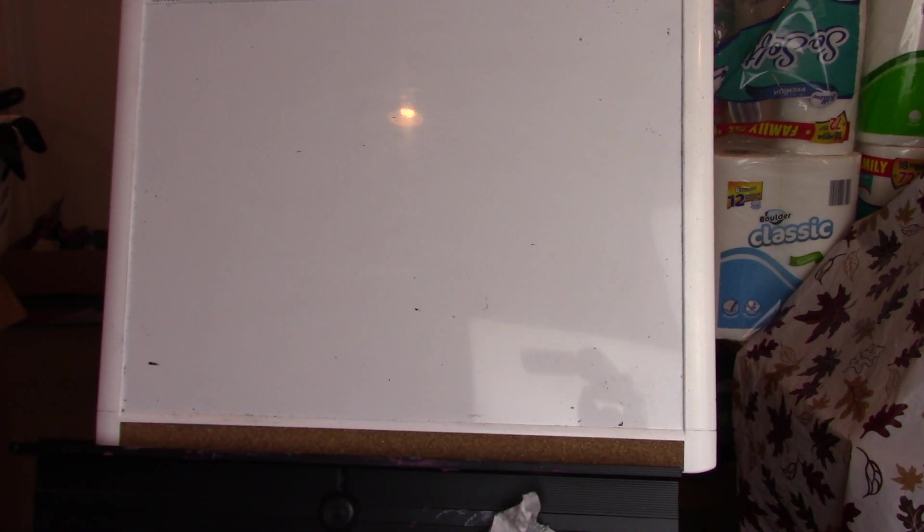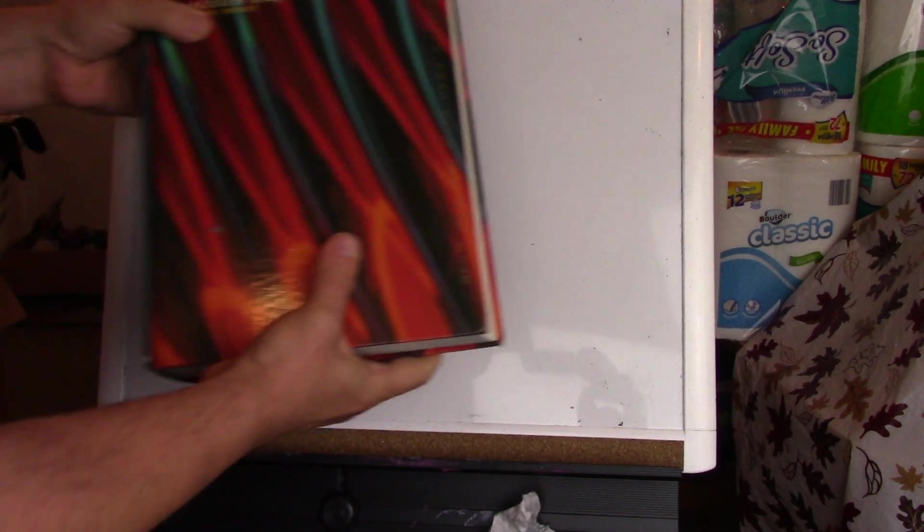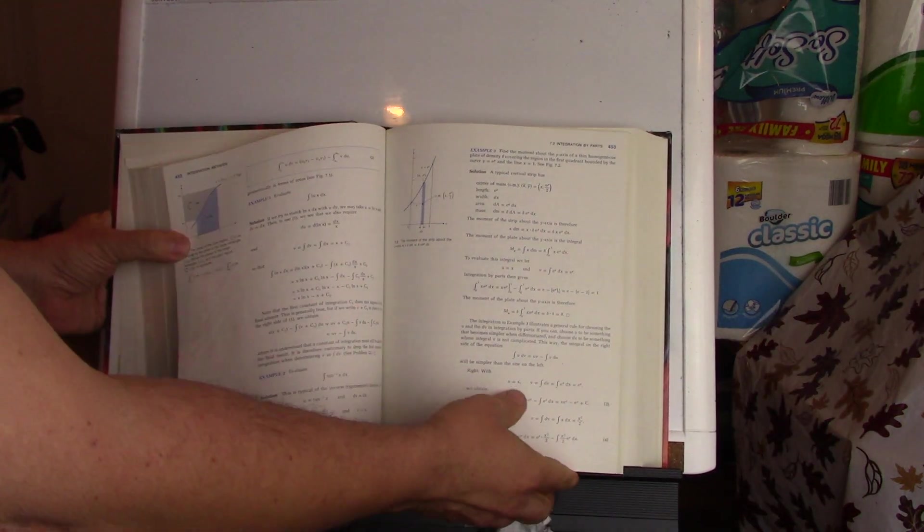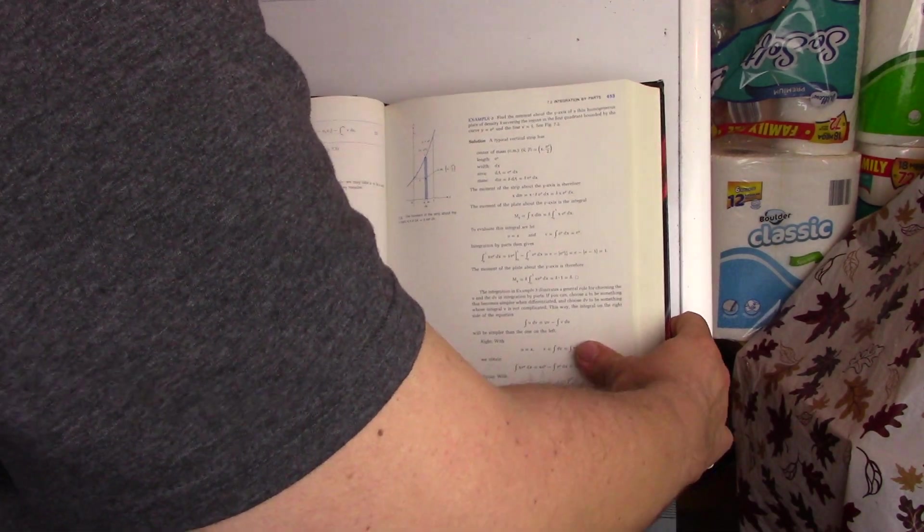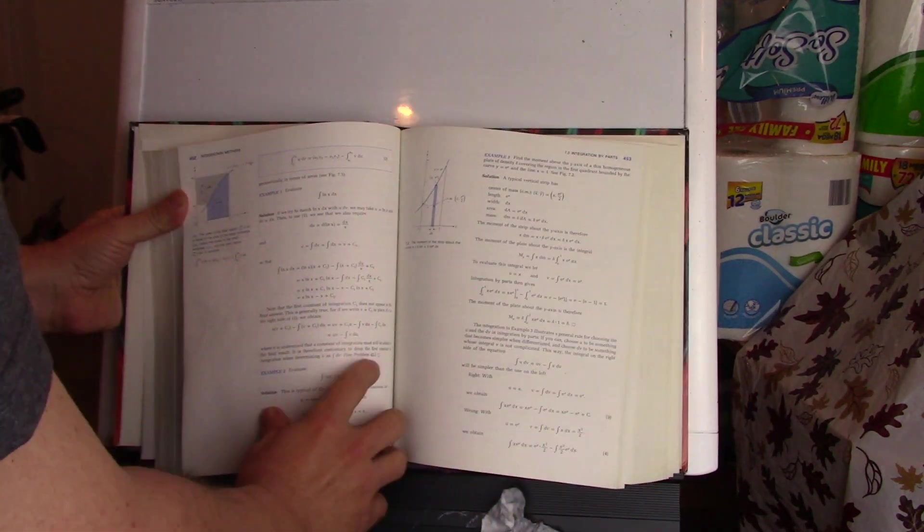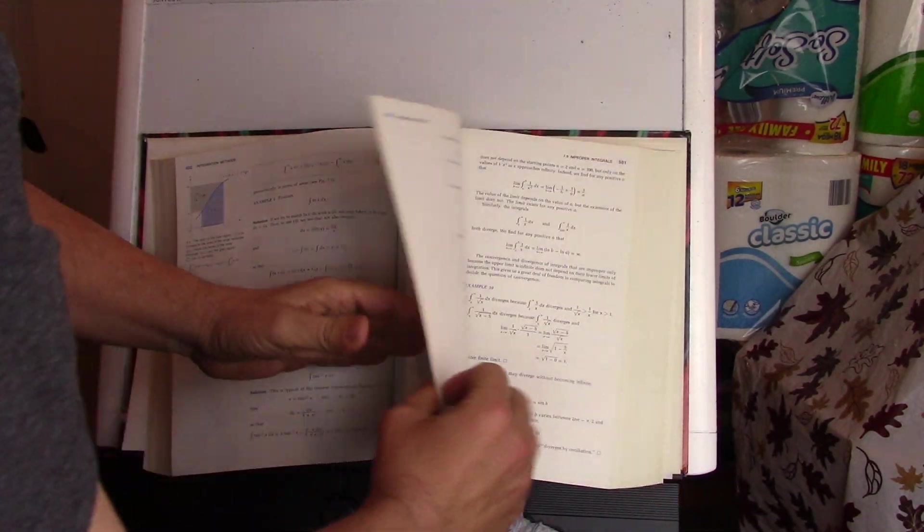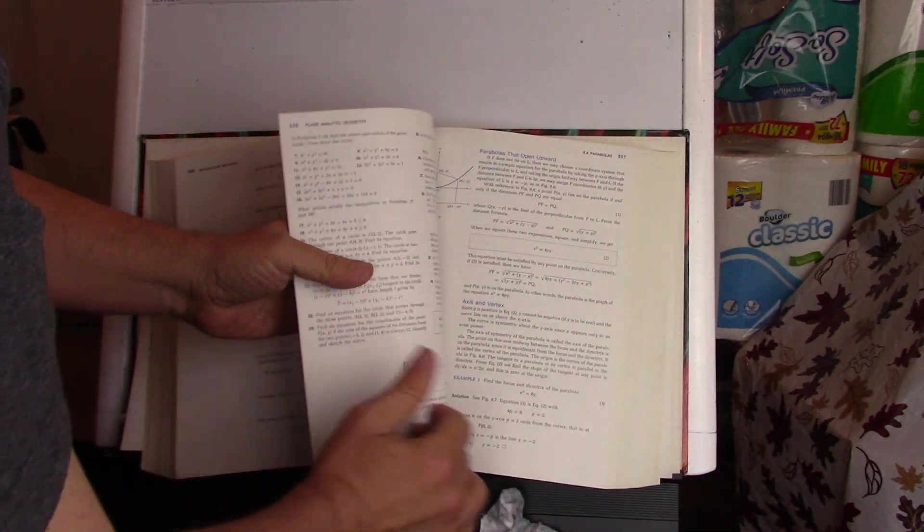So I think the first book that I have, you all have seen before, and it's Thomas and Finney Calculus. I went through about half of this book. I think I stopped at chapter 7, Integration, and then I moved on to Number Theory.